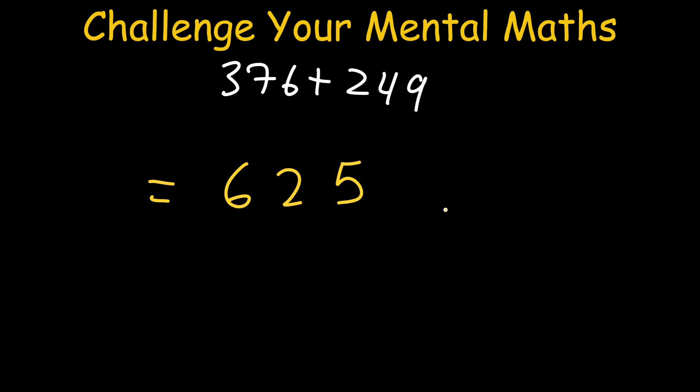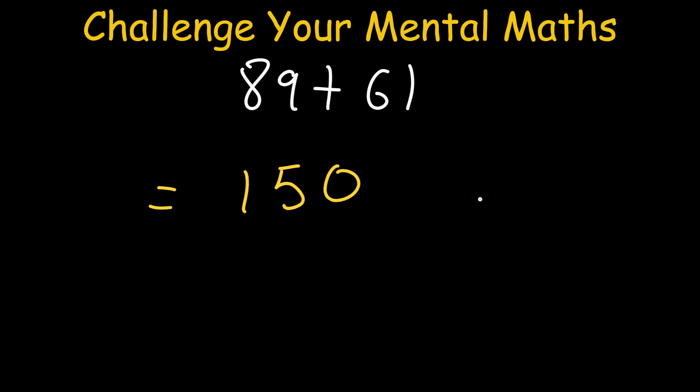Let me know your final average in the comments. Another one: 89 plus 61. 5, 4, 3, 2, 1, 0. Final answer: 150. How many did you get? Did you get 1 out of 4? 2 out of 4? 3 out of 4? Or did you get 4 out of 4? Let me know down in the comments your total.